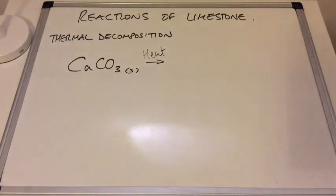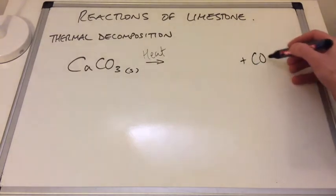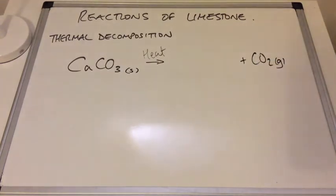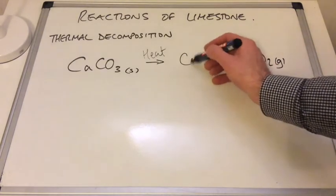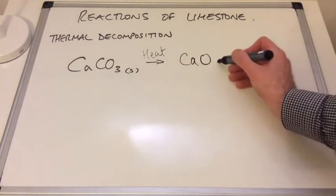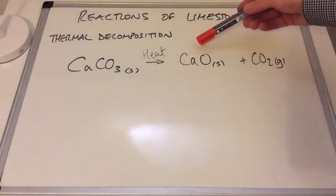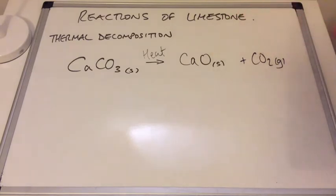Thermal means heat, but not just any heat — it needs to be a very high temperature. Under high temperature, it decomposes and breaks down, producing a gas and a solid. The gas is carbon dioxide. What's left is still calcium and one oxygen, so we form calcium oxide as a solid. We need to know this because calcium oxide has uses we'll come on to later.